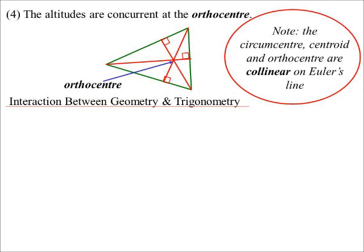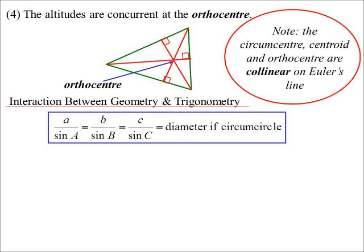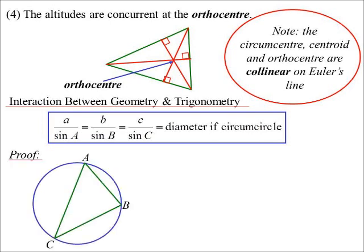Trig can be used in circle geometry. The connection is the sine rule. So a over sine A is b over sine B is c over sine C. The diameter of the circumcircle, not if circumcircle, but diameter of. So let me prove that for you.